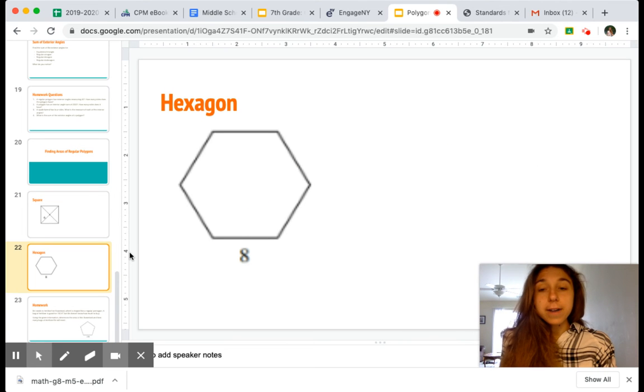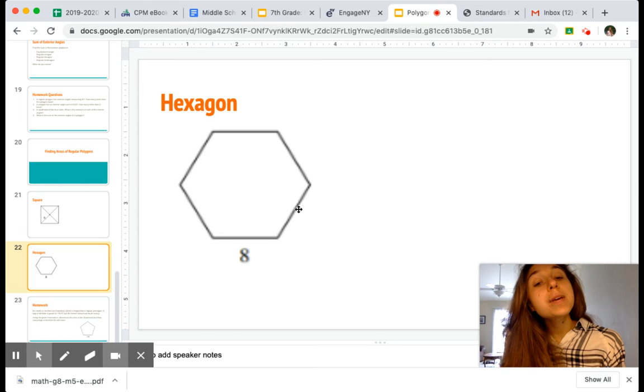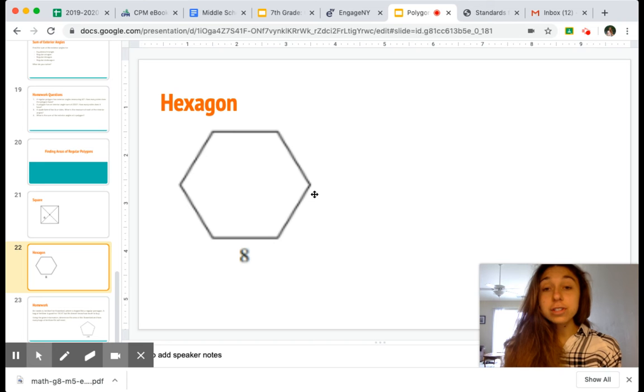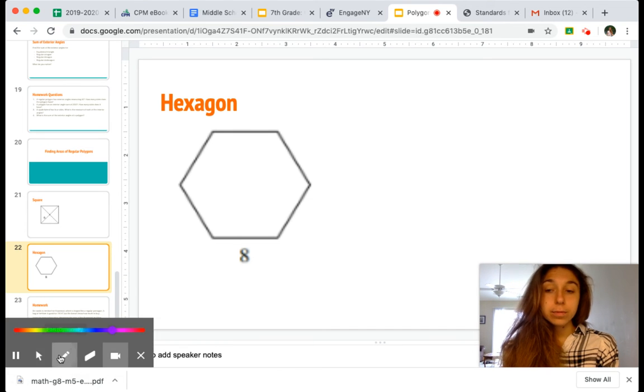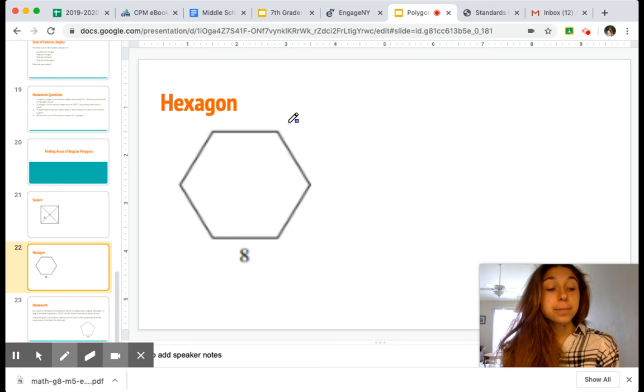So we want to find the area of a regular hexagon. Remember, to be a regular polygon means all of your sides and angles are equivalent. So all of the outsides of our hexagon are 8. And you'd be able to use, if we needed the angle measures, which we don't right now, but you could use those formulas we were working with.